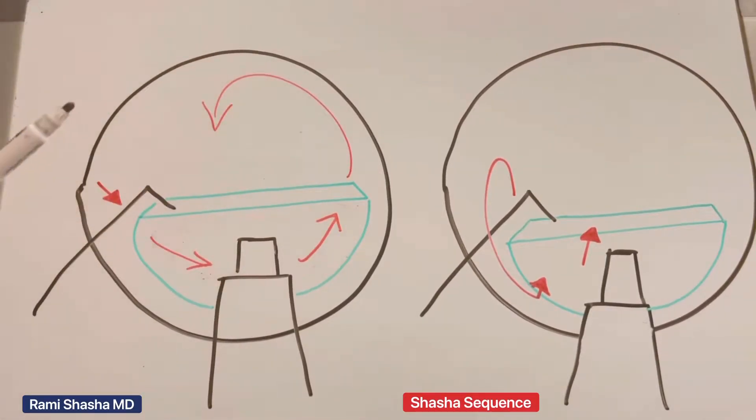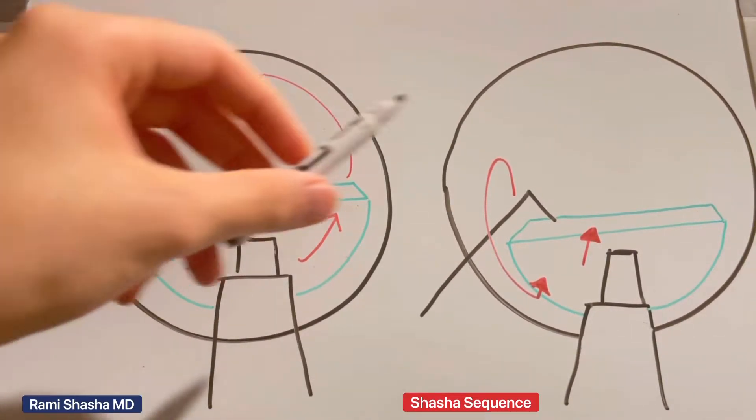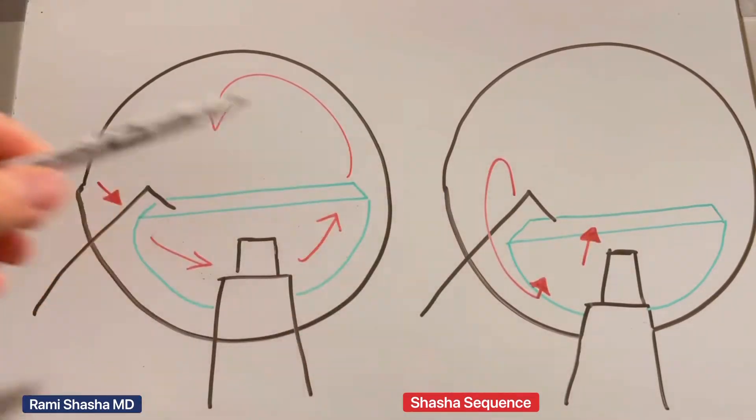This is a comparison of conventional cataract surgery when we're left with the hemi-nucleus in relation to the Shasha sequence.